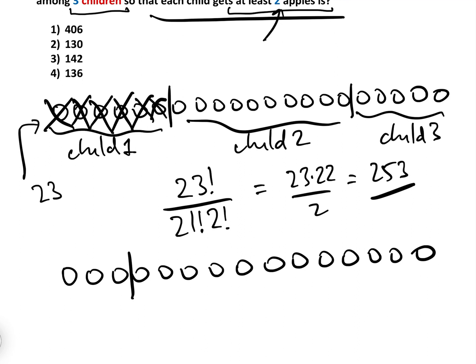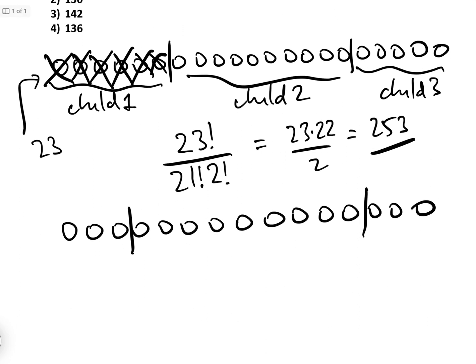We have the two bars and we plunk them anywhere. And we know therefore that the way of permutating this will be 17 factorial, because there's 15 identical apples and two bars, over 15 factorial 2 factorial, which equals 17 times 16 over 2.